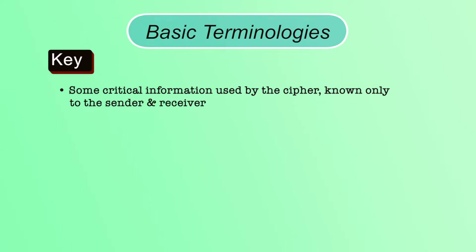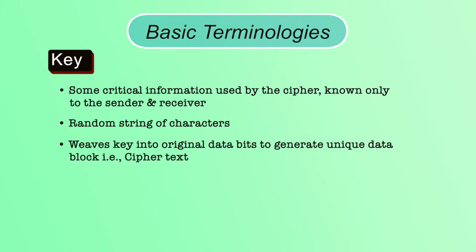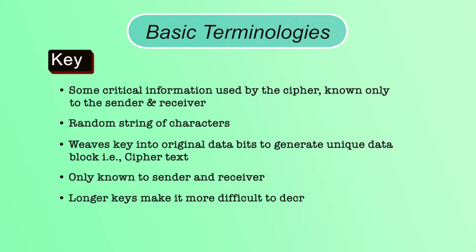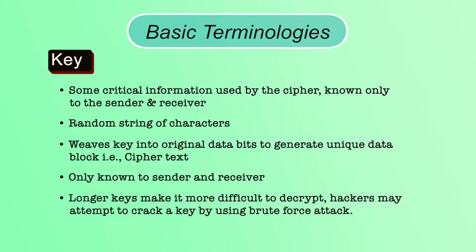Key is critical information used by the cipher to convert plaintext to ciphertext — it is a random string of characters. Security of the cipher depends on the key, and it should be known only to the sender and receiver. If an attacker knows the key, they can easily identify the original message. If we use a key of shorter length, an attacker can identify the key using a brute force attack and decrypt the message. That is why longer keys are more difficult to decrypt.